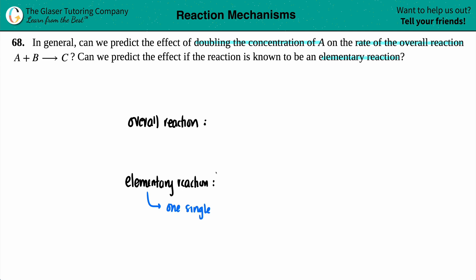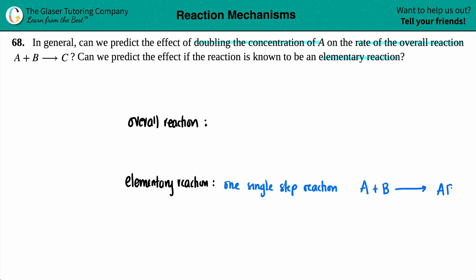It's a one single step reaction, and that's all there is to it. So if A plus B yields AB, that's it — it's only this one single step. I'm looking at this step, I know exactly what's going on, and there's nothing else to it.